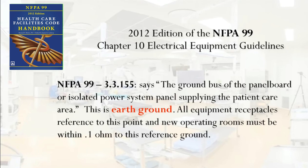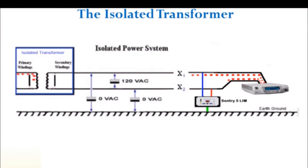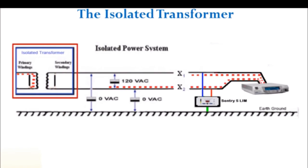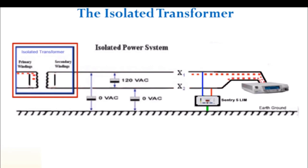NFPA 99 section 3.3.90 says primary and secondary windings are physically separated, and it inductively couples its ungrounded secondary winding to the grounded feeder system that energizes its primary windings. Simply put, located in the isolation transformer are the primary and secondary windings. The primary windings are not referenced to secondary windings — they don't touch each other.